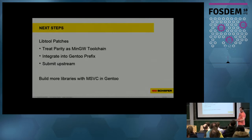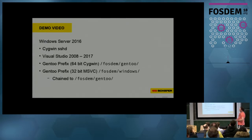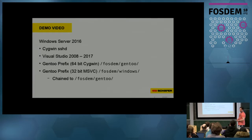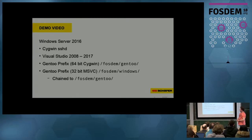The goal is to build more libraries using the Visual Studio toolchain within Gentoo. For the demo, I have set up a VirtualBox Windows Server 2016 with a standard Cygwin setup plus Cygwin sshd. On this Windows machine I have installed all Visual Studio versions from 2008 to 2017. I have set up a Gentoo Prefix as a 64-bit Cygwin prefix in /fosdem/gentoo, and a chained prefix using the Cygwin prefix to manage the Windows prefix in /fosdem/windows.